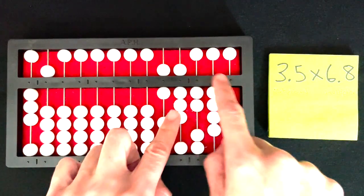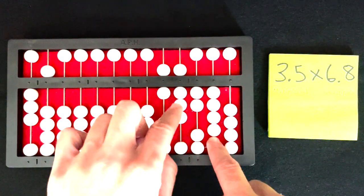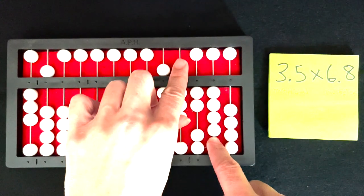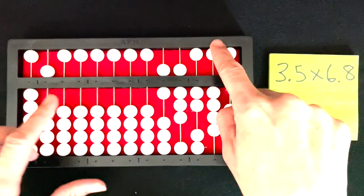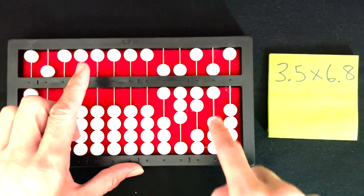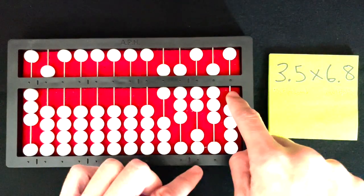I'm going to multiply again, keep my finger on that tens rod, and multiply again: 8 times 5, which is 40. 4, 0, 1, 4, 5, exchange 2, 3, 3, 4, and a 0.